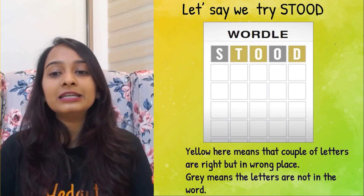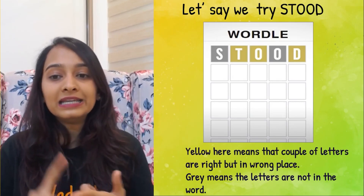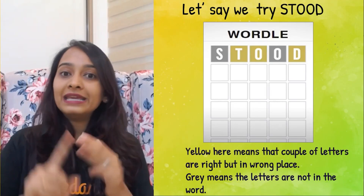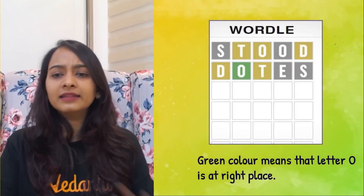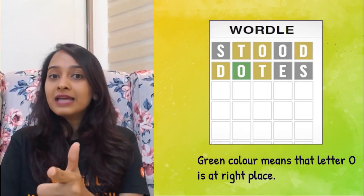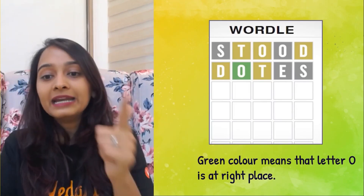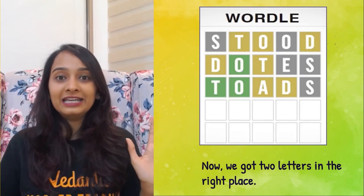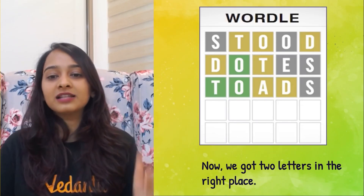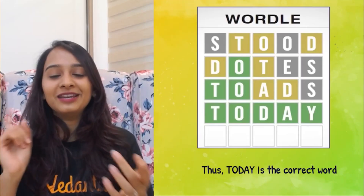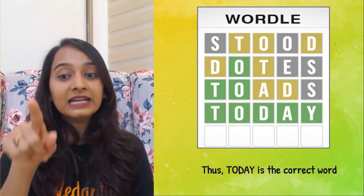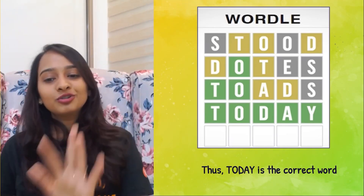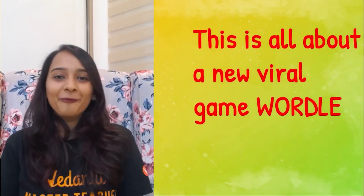I first guessed 'stood' — S-T-O-O-D. The letters T, O, and D turned yellow, meaning they are in the actual word but placed in wrong positions. Then I tried 'dotes' — D-O-T-E-S — and O turned green, meaning O is in the second position. Then I tried 'toads' — T-O-A-D-S — and T turned green at the start. Knowing that D and A are present but wrongly placed, I figured the word was 'today' — T-O-D-A-Y — and that was correct! That's how you play Wordle.